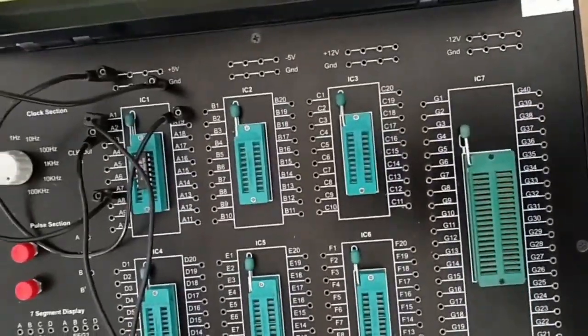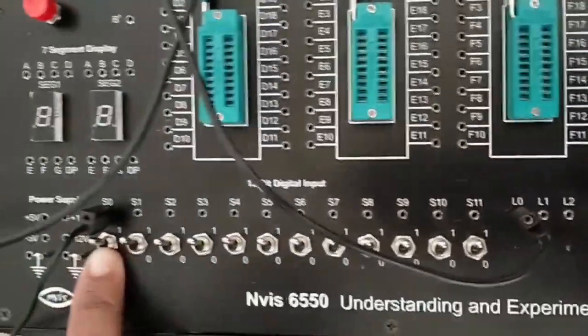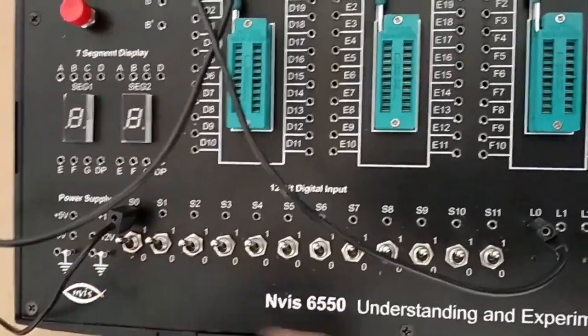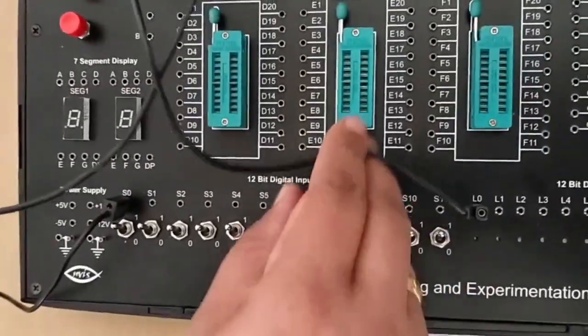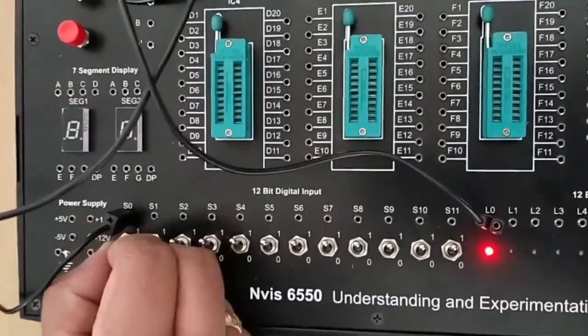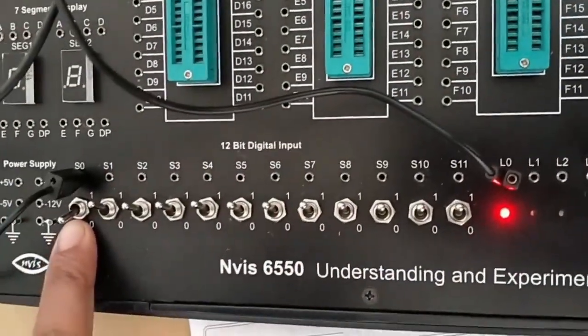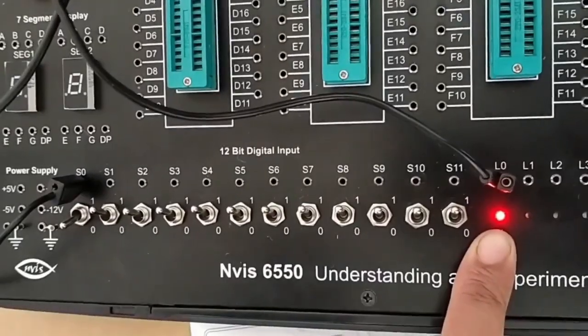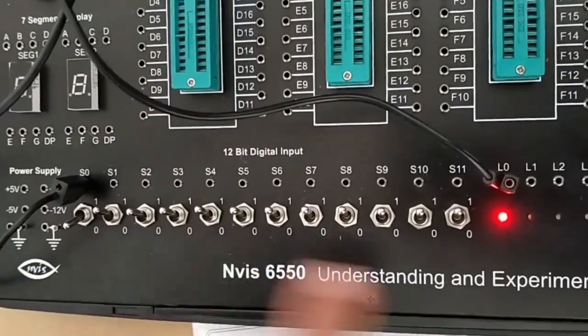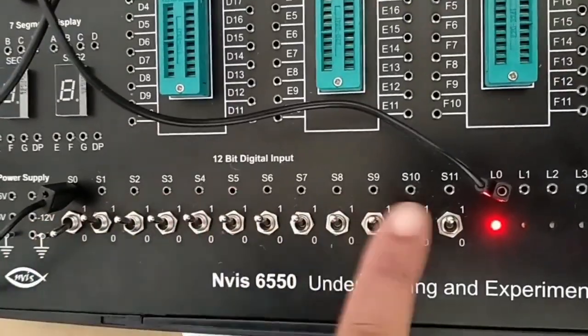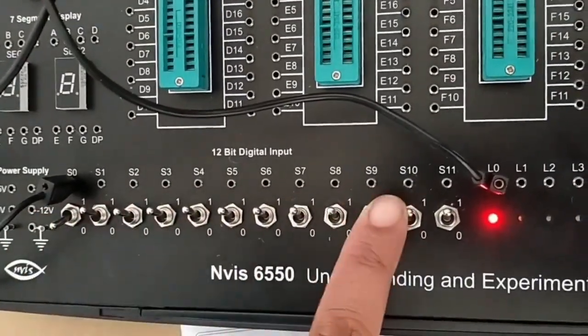When you give logic 1 as input, the output will be logic 0 and the LED will not glow. When you give logic 0 as input, then the output will be logic 1 and the LED will glow. You can use these switches as inputs to verify the NOT gate operation.